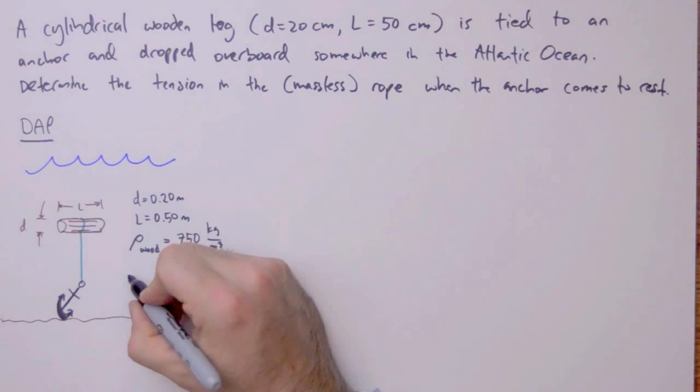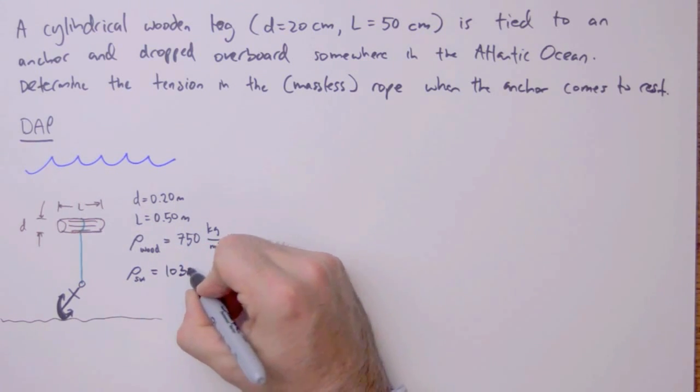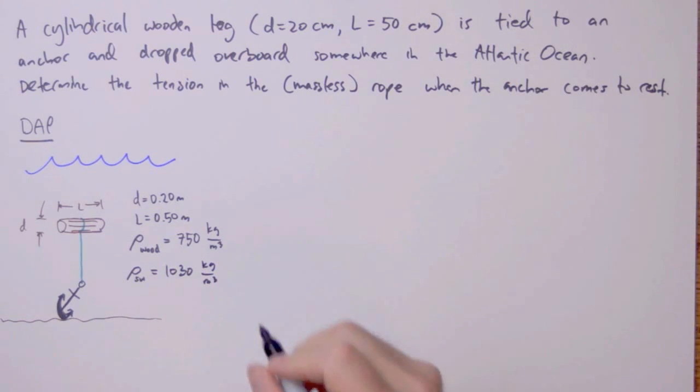And the last piece of information we might want to put on here is the density of salt water. The density of salt water is about 1,030 kilograms per cubic meter.